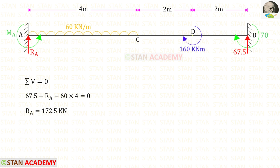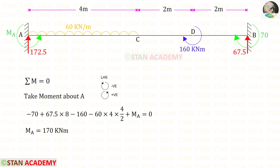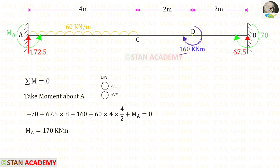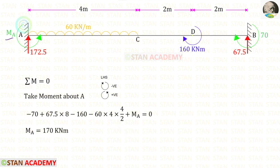By applying the rule sigma V = 0, we can find RA. Now from point B, let us take a moment about A and find MA. MB is acting in the clockwise direction so it is negative. RA is acting in the anticlockwise direction so it is positive with distance 8. The concentrated moment is clockwise so it is negative. The UDL is clockwise so it is negative — we multiply the load by distance and distance by 2. We assume MA is anticlockwise, giving a positive value, confirming our assumption is correct: MA is acting in the anticlockwise direction.